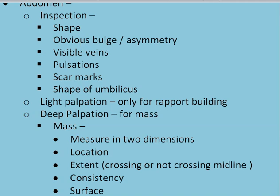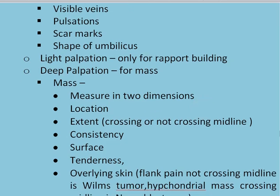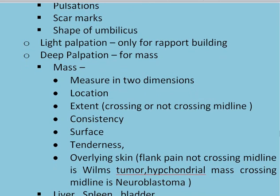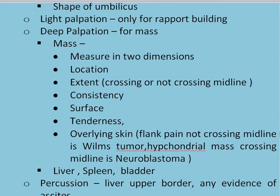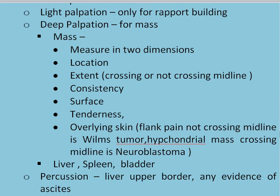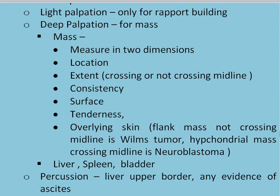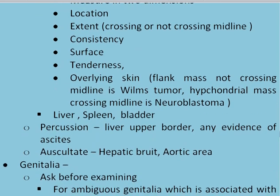Remember to tell the patient that this will not hurt and ask him before palpation where it hurts the most, so that you should not inadvertently hurt the patient. Then you do the deep palpation for the mass. For the mass, you measure it in two dimensions: location — where it is located and its extent, whether it's crossing or not crossing the midline. Assess consistency, surface, tenderness, overlying skin, and flank involvement. A flank mass not crossing the midline is Wilms tumour; a hypochondrial mass crossing the midline is neuroblastoma.